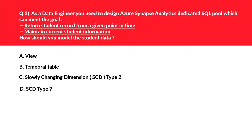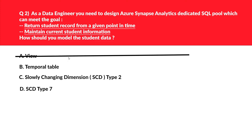This question is about Synapse Analytics — you got to be prepared because we will get many questions related to this. Let's first look at option A, that is a view. A view is like a subset of the original table where we display or fetch only relevant information. If you cannot return a record from a given point in time as required by the question, therefore it's an incorrect choice.